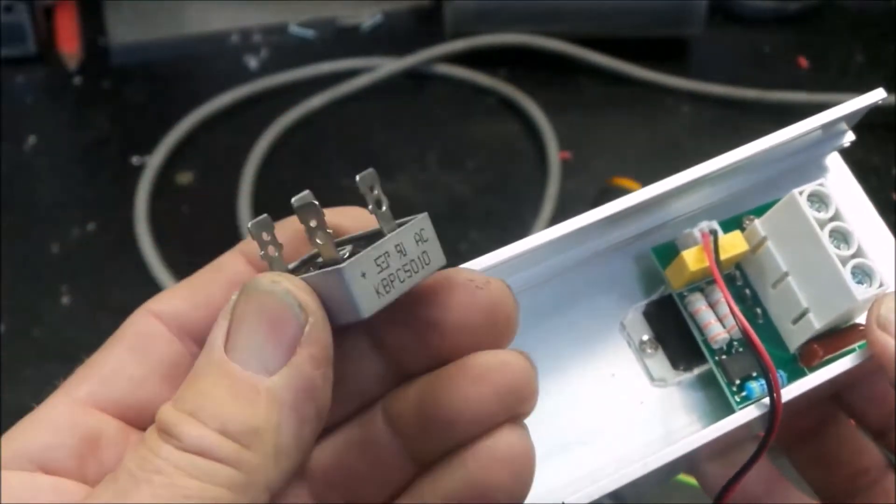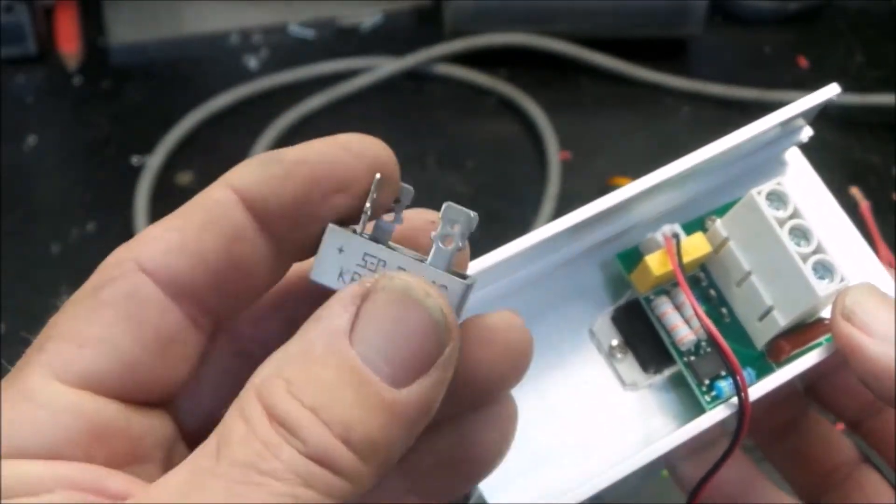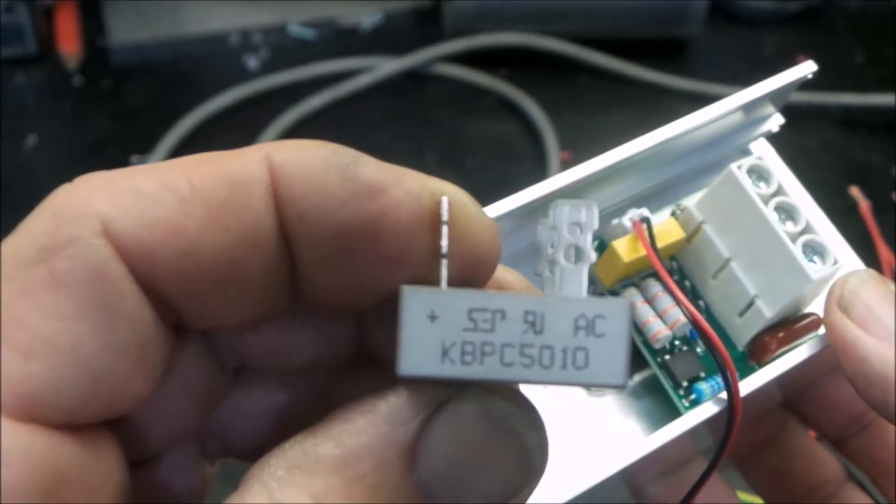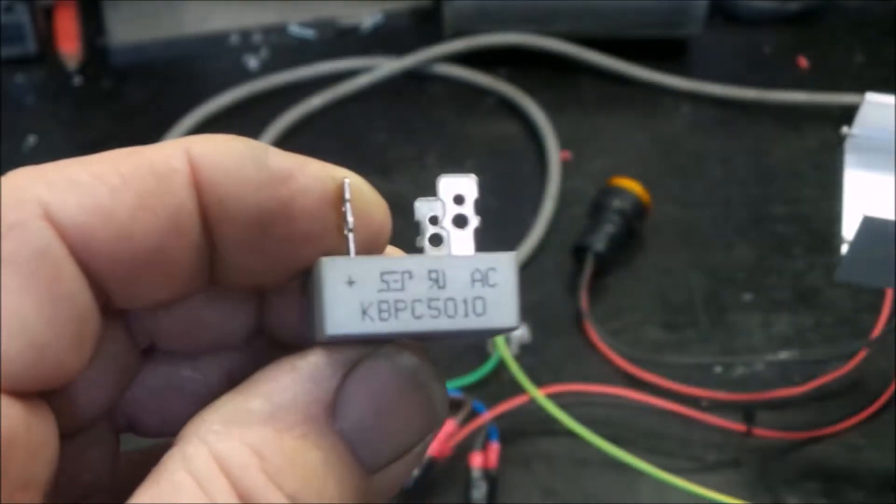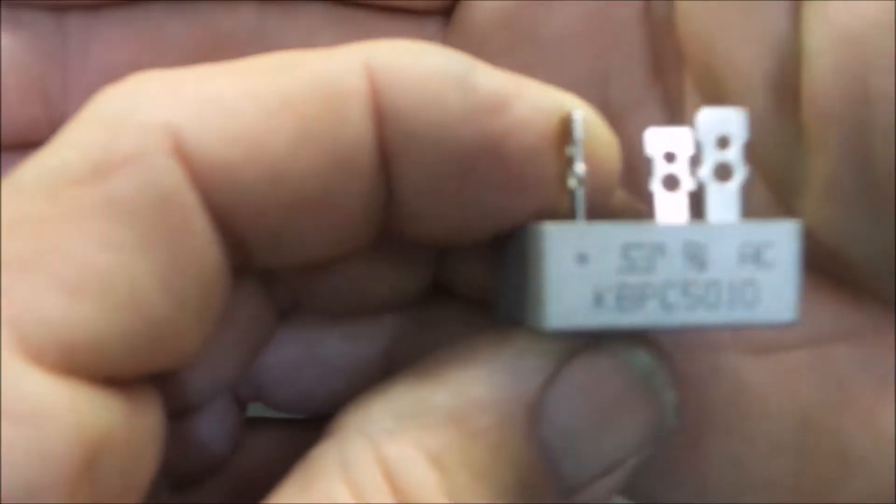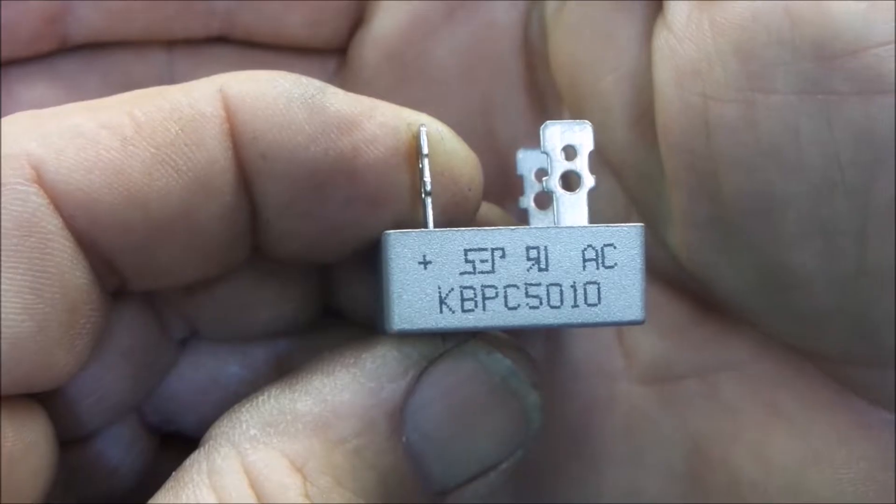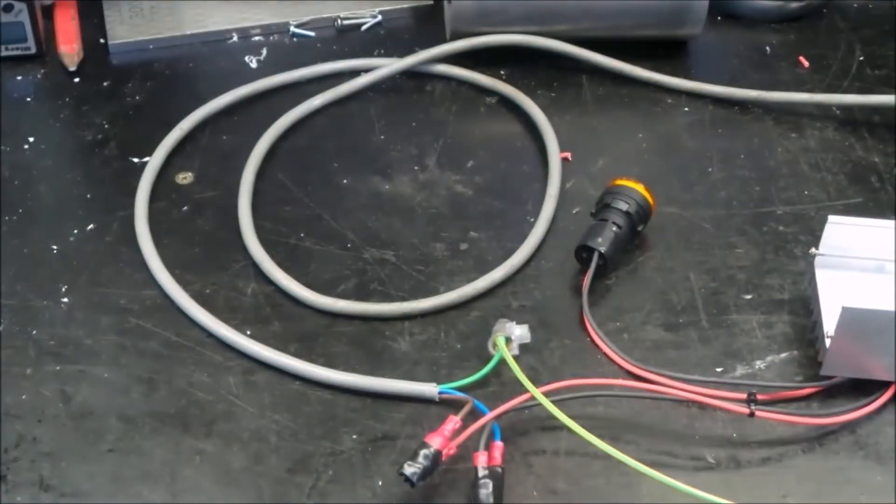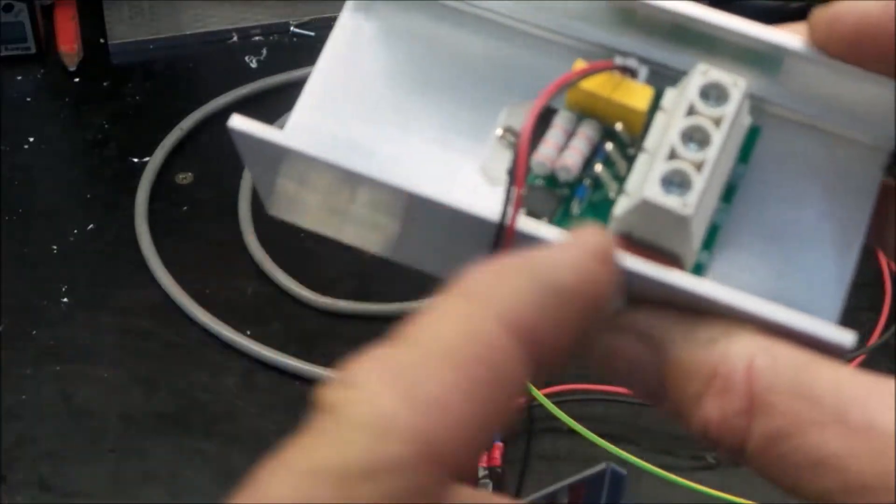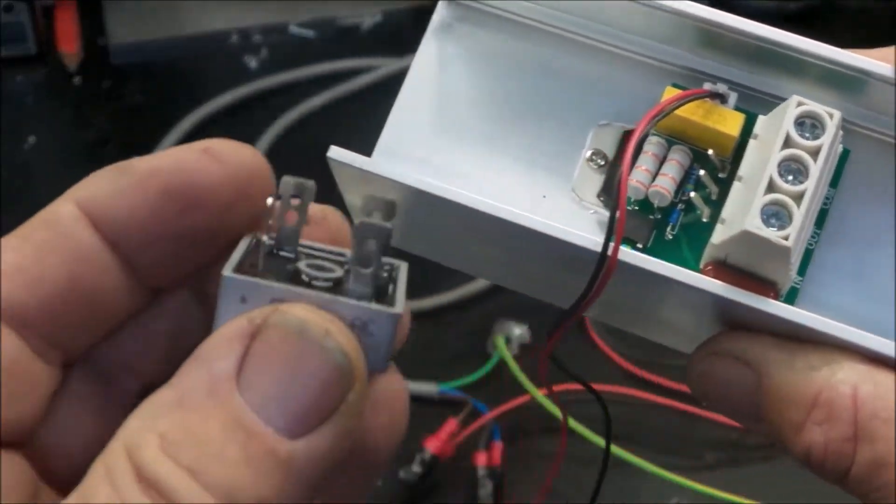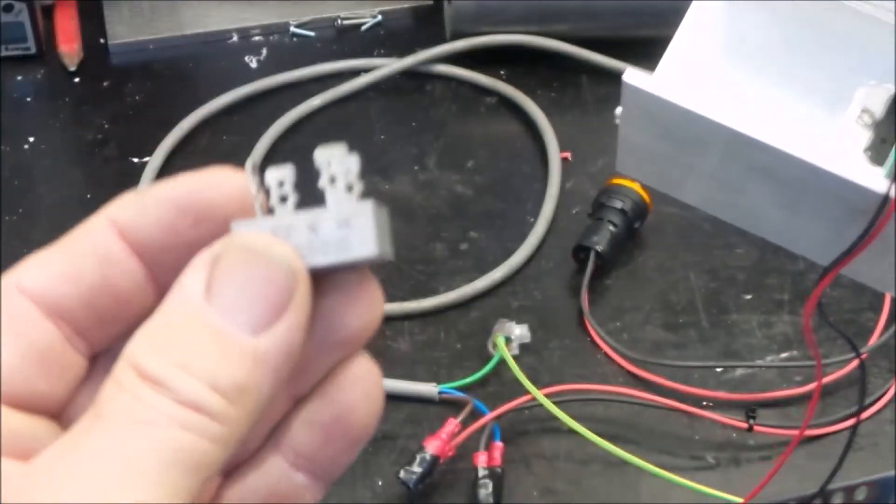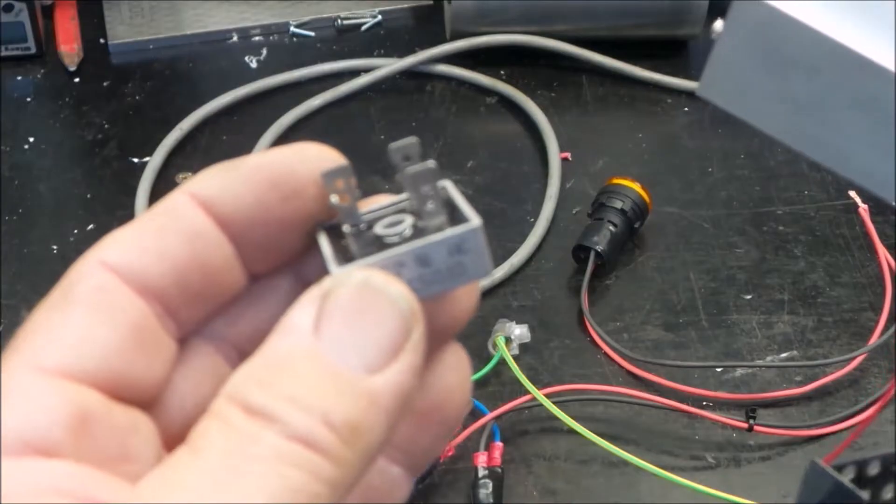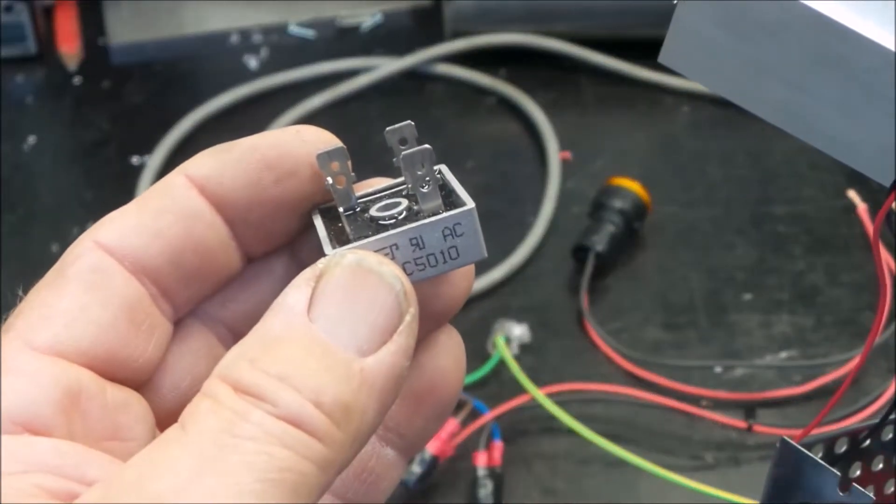The other component that makes all this work is a bridge rectifier. This converts your AC signal to DC. You can see the part number on it there. Okay, now they're really the two main components. That's really all there is to it. This is AC in, AC out, and you run the AC outline into your bridge rectifier and then you run the outputs from your bridge rectifier into your DC motor. So let's have a look at how we do that.